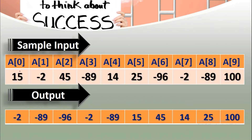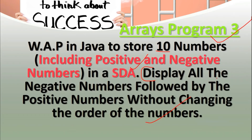Yeh mera sample input hai. Maine 10 ka ek array liya, 0 se lekar 9 number location tak values ko enter karna hai. Mix up values enter ki - positive, negative. Integer type ke numbers enter kiye. Ab jo output aayega, pehle toh saare ke saare negative jo numbers hain wo print honge without changing the order, bina order ko change kiye.